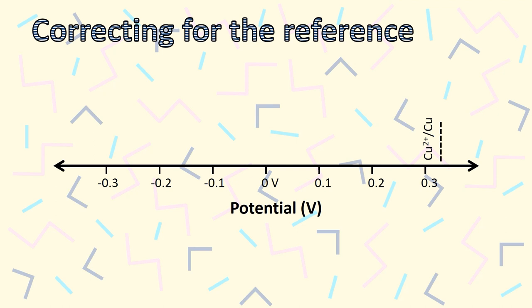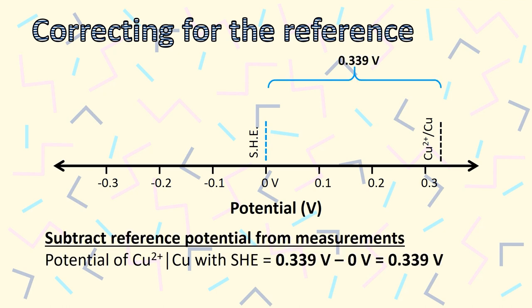Let's say we're working with copper, which has a half potential of 0.339 volts, and we're using a standard hydrogen electrode that has a potential contribution of 0 volts. Determining the difference in potential is easy. Just subtract by 0. Our meter would read 0.339 volts.